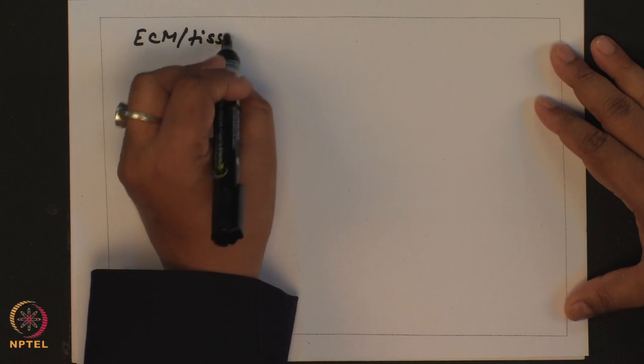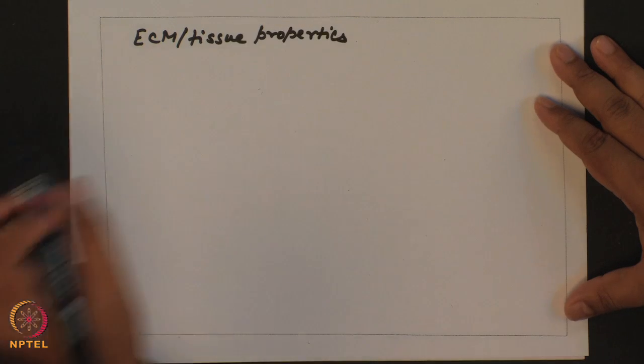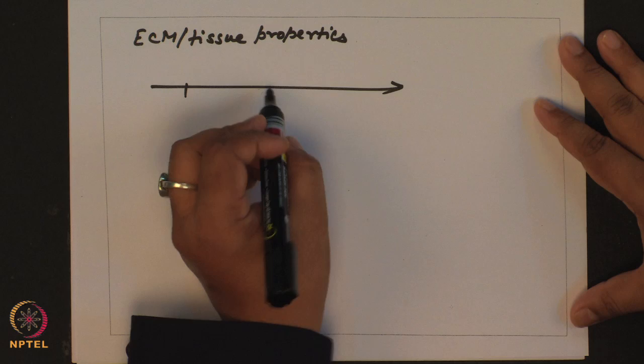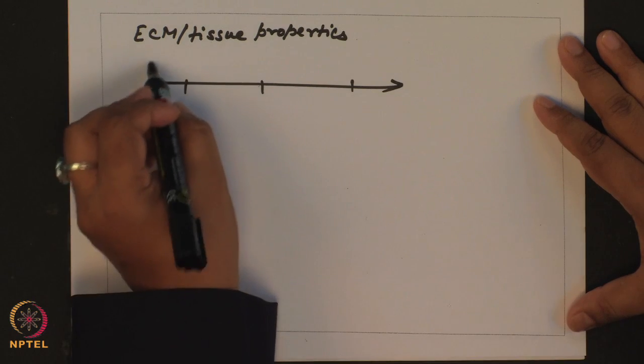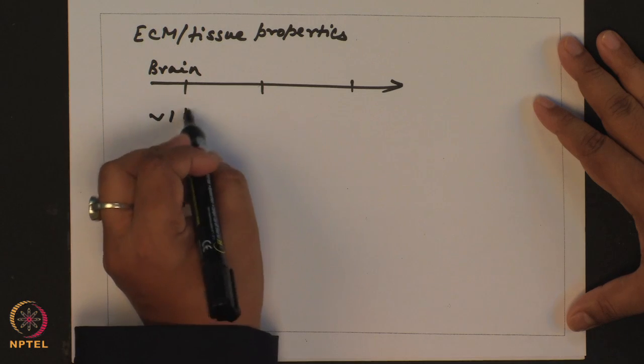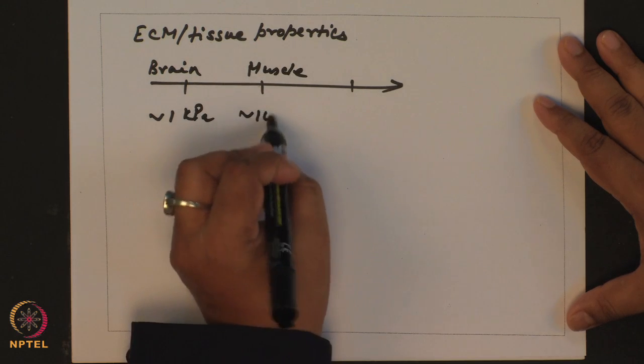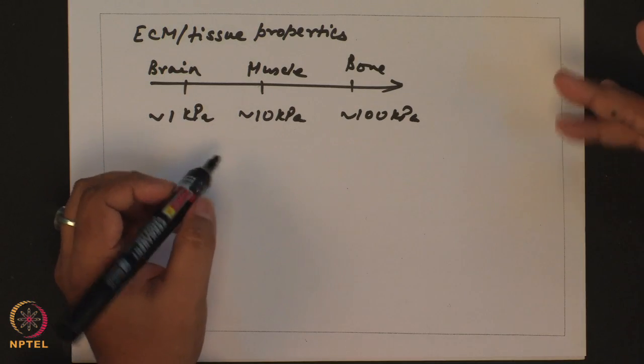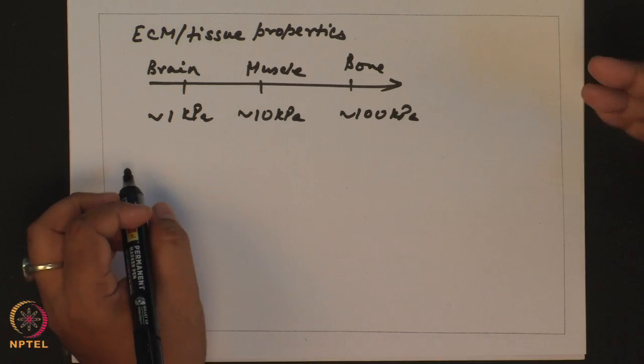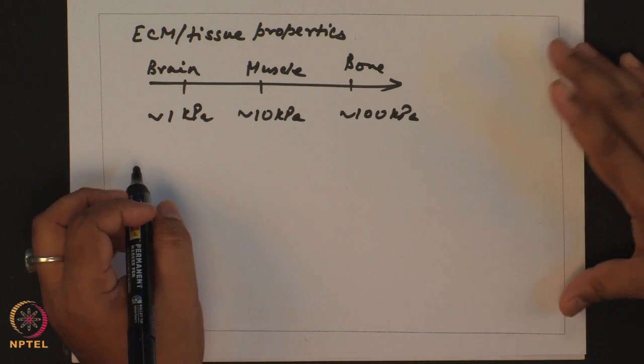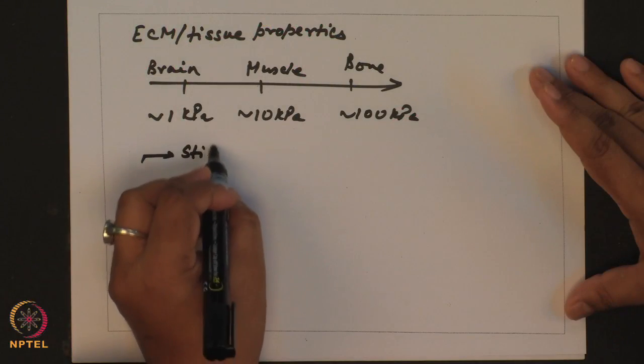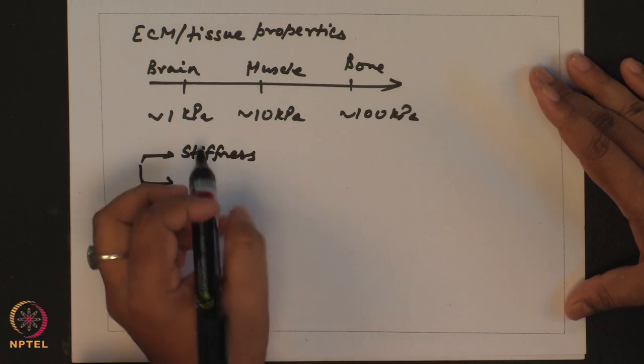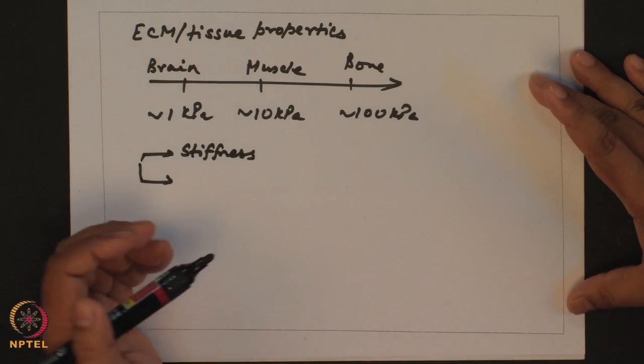One of the ideas that I repeatedly stressed on was modulation or change in ECM properties or tissue properties. Within our body we span tissues of multiple stiffnesses, starting from brain which is order 1 kPa in stiffness, muscle order 10 kPa and bone order 100 kPa. So in order to study how cells behave in these different contexts, we must have a way of developing substrates where these properties can be regulated.